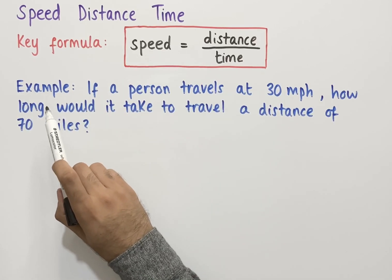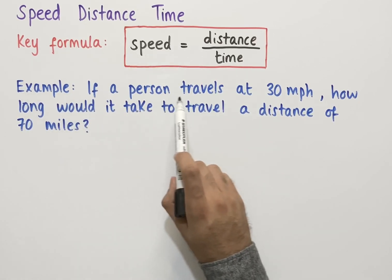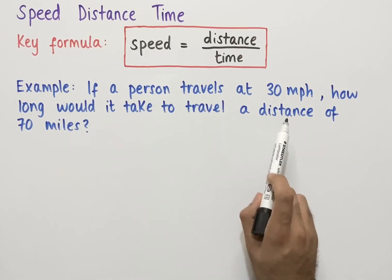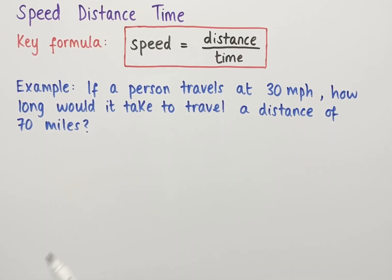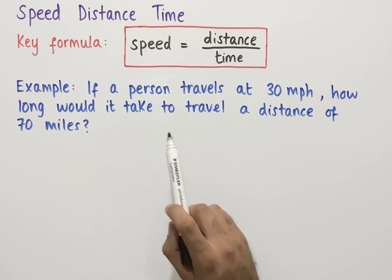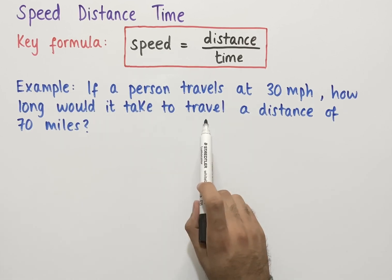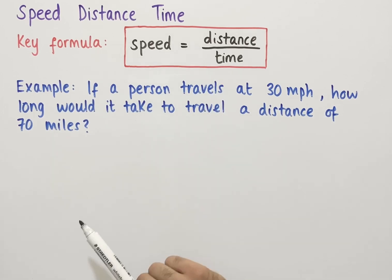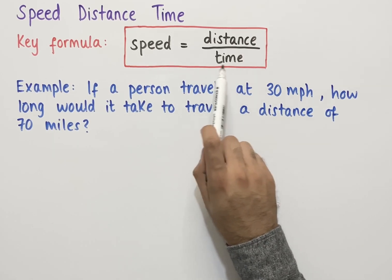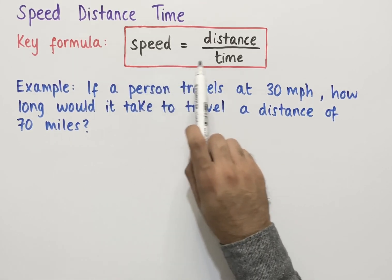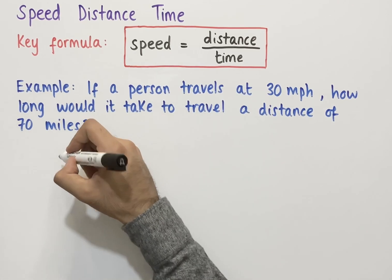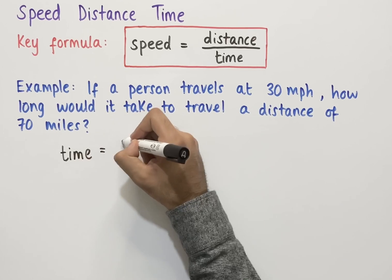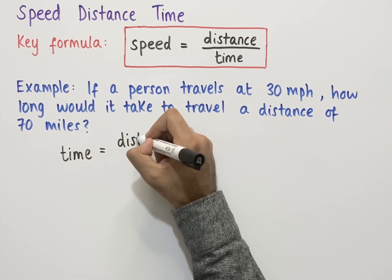Let's look at a second example. The question says: if a person travels at 30 miles per hour, how long would it take to travel a distance of 70 miles? We're trying to work out the time, so we need to rearrange the formula so that time is the subject. We do that by multiplying both sides by time and dividing both sides by speed — in other words, using the formula: time equals distance divided by speed.